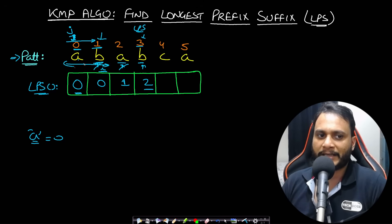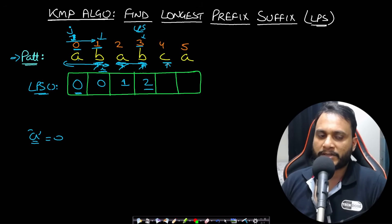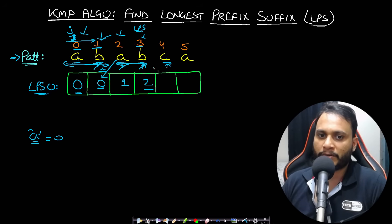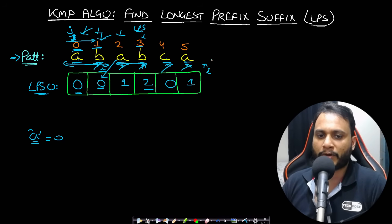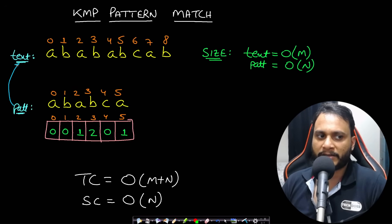This means the longest prefix which is also a suffix ending at index 3 is of length 2. 'AB' is a prefix and 'AB' is also a suffix. Now at 'C': matching 'C' with 'A' — not matching. Look at LPS[j−1]=0, try matching 'A' with 'C' — still not matching. Since j is already at 0, write 0 and move forward. Matching 'A' with 'A' — it matches, write j+1=1. Now i is out of bound — this is the LPS for the given pattern.